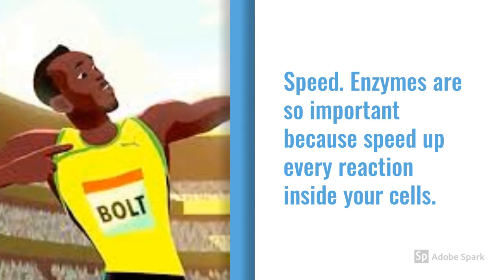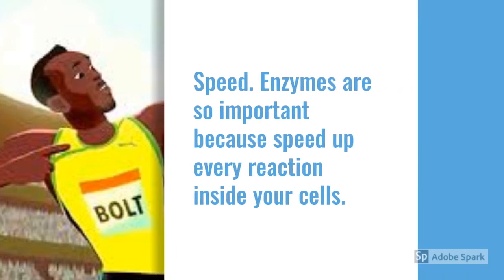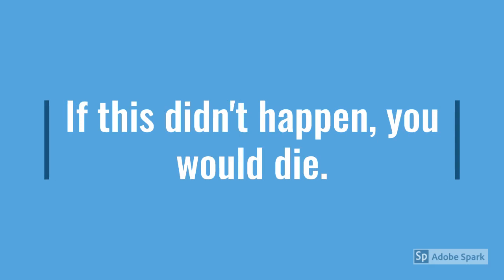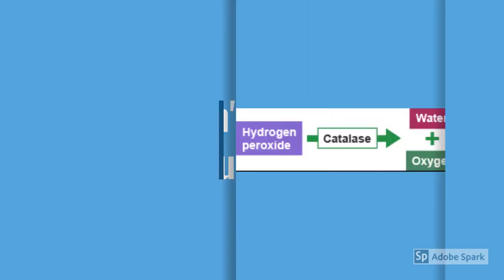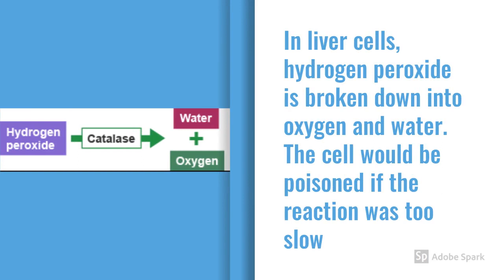Enzymes are so important because they can speed up all your cellular reactions — if enzymes didn't do that, you would die. Take this for example: inside your liver, hydrogen peroxide can be broken down into oxygen and water really quickly because of an enzyme called catalase. If that didn't happen, your cell would end up being poisoned, because hydrogen peroxide is quite poisonous.